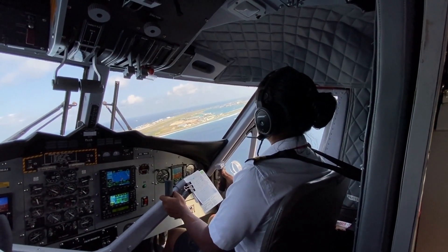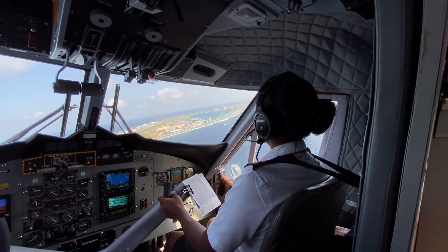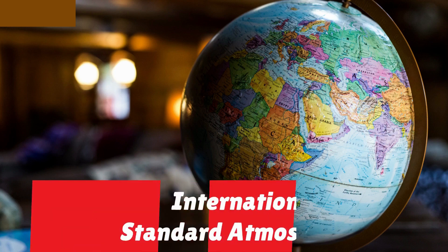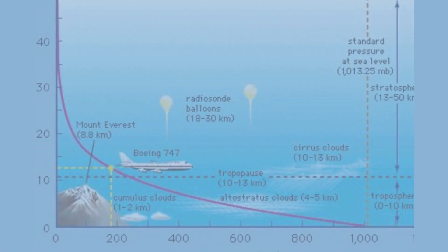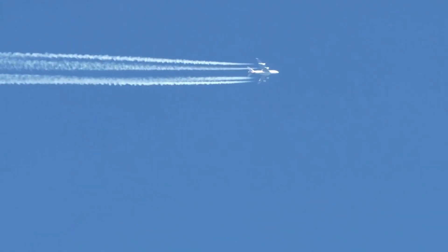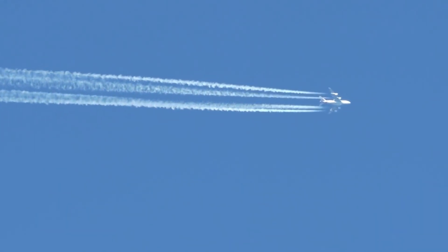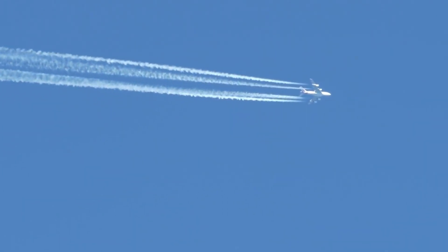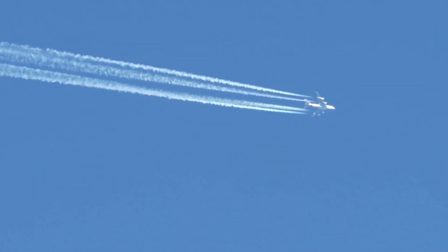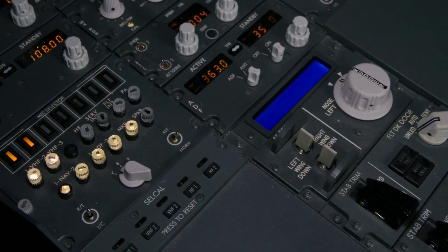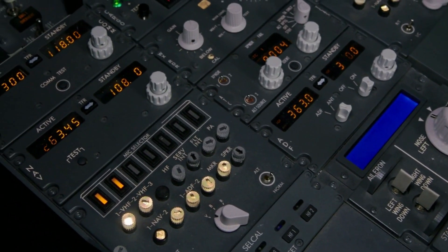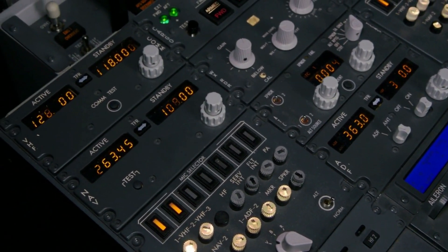Understanding these traits is vital — the pilot needs to know their aircraft inside and out. Next, we consider the International Standard Atmosphere, or ISA. The ISA is a model used in aviation, providing a consistent set of atmospheric conditions. Imagine it as a hypothetical vertical distribution of atmospheric properties like temperature, pressure, and density. These values are essential for aircraft performance calculations.